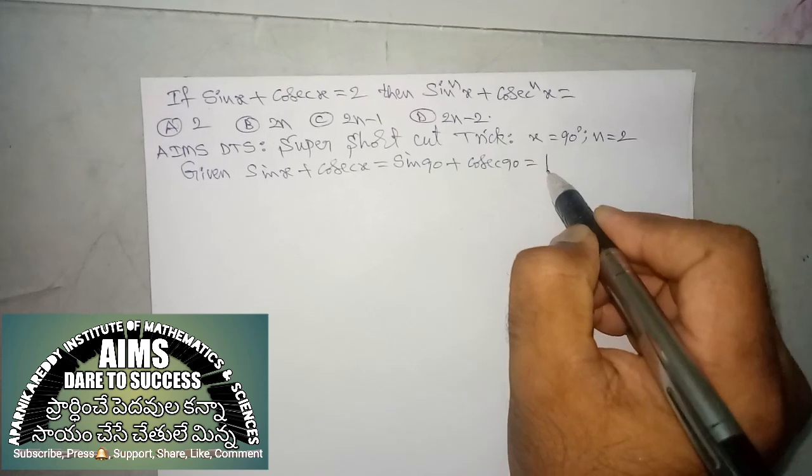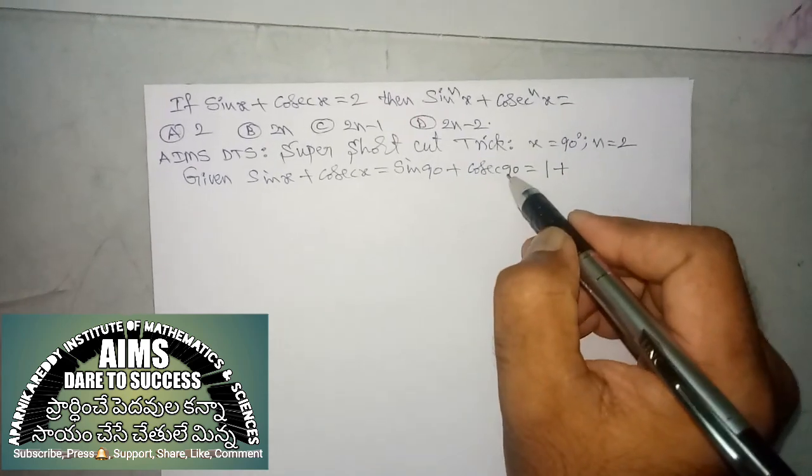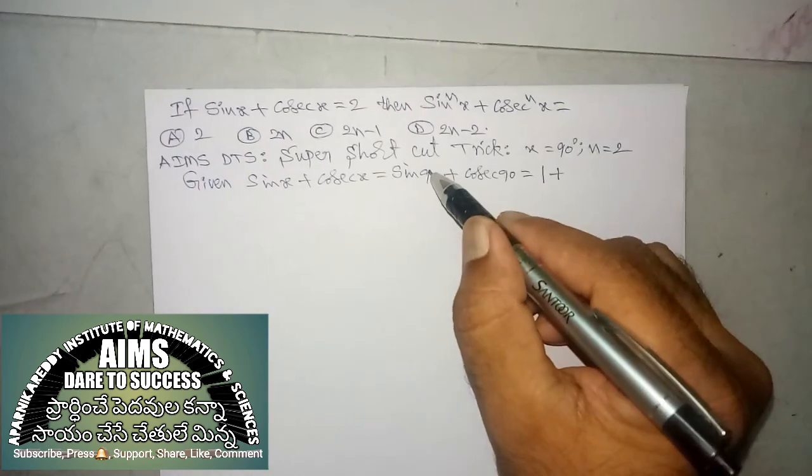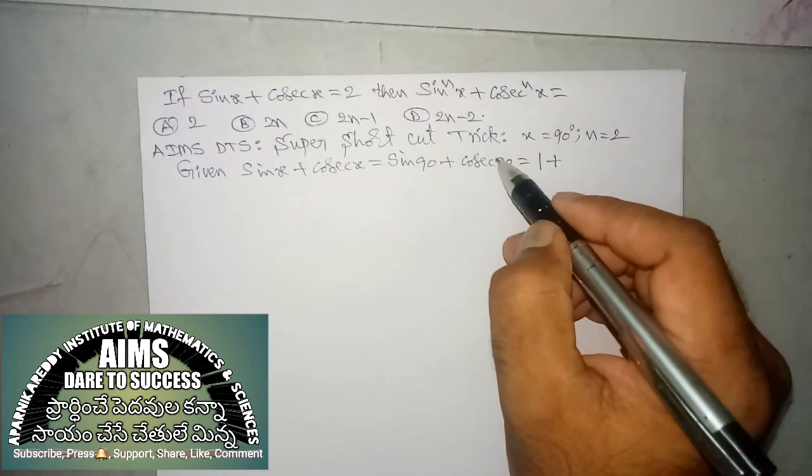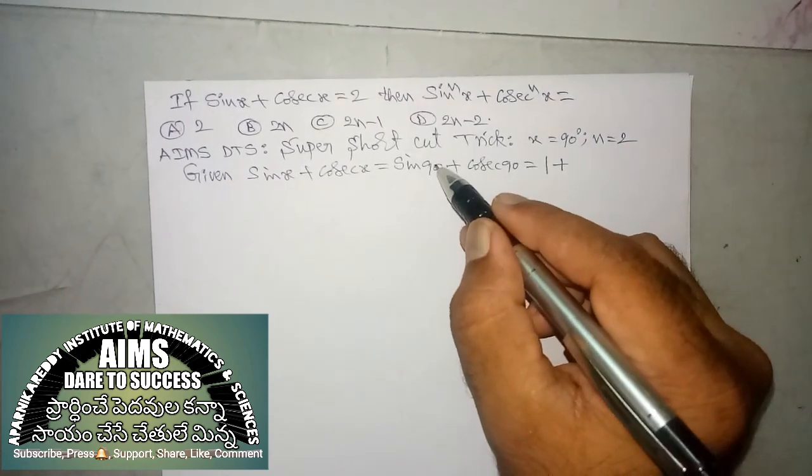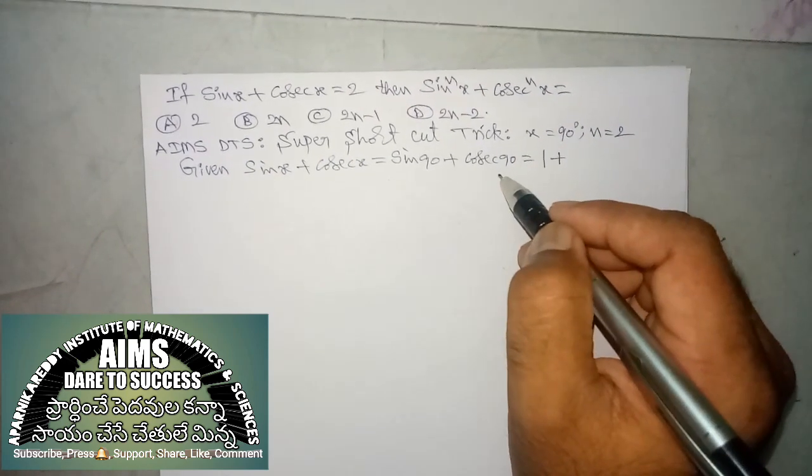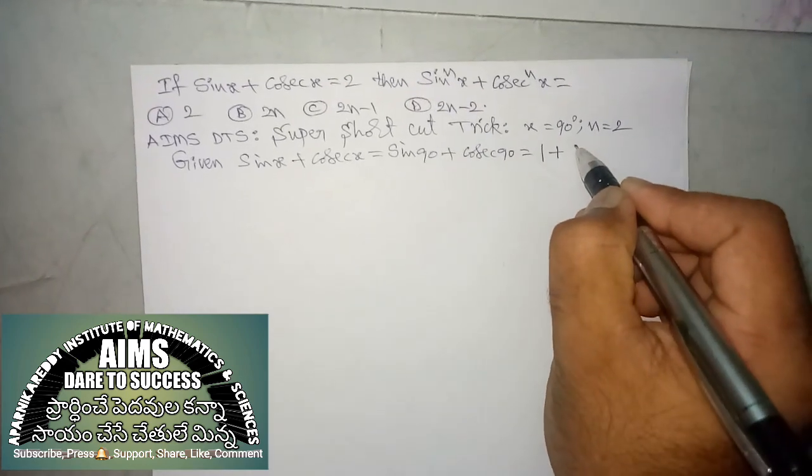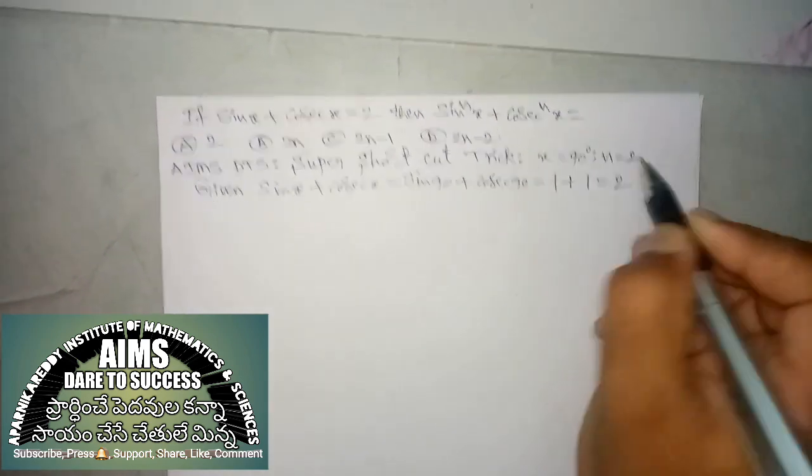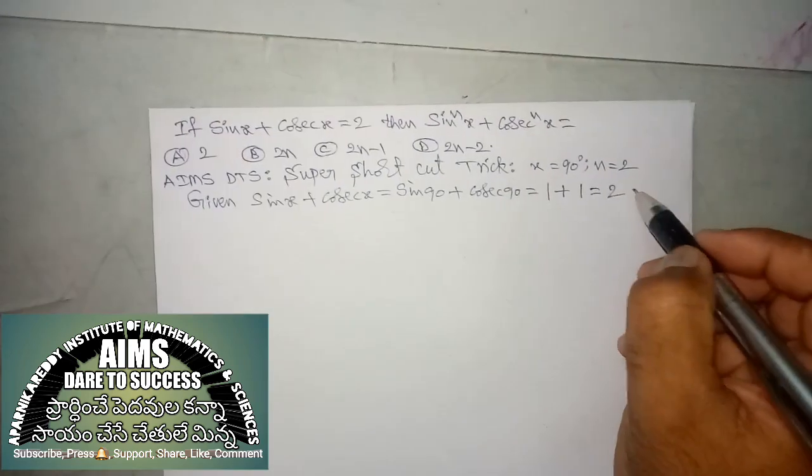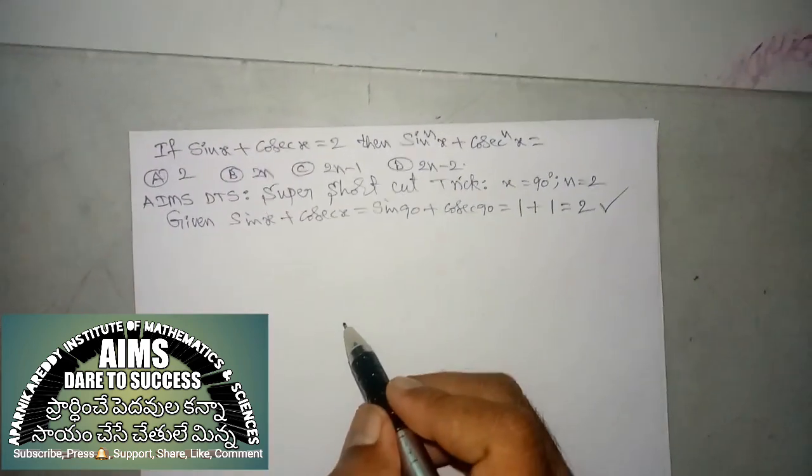sin 90 value 1 plus cosecant 90 also related to sin 90. Cosecant value is reciprocal of sin, 1 by sin 90, sin 90 value 1. So, cosecant 90 also 1, 1 plus 1 is equal to 2. So, from the given question, we got same answer.